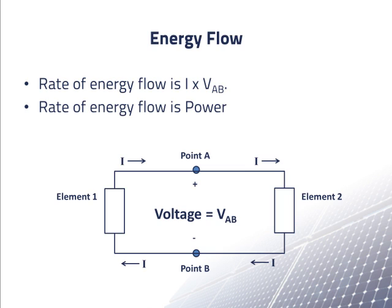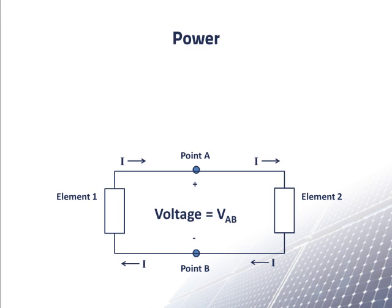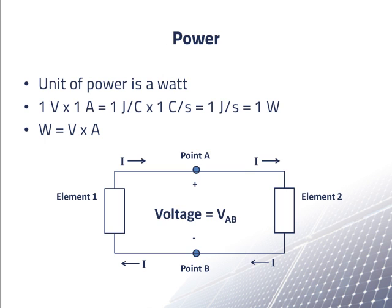This is also the rate at which energy leaves the circuit through element 2. We have already seen that energy flow per second is power. Since the unit of power is a watt, a volt times an amp equals a watt.